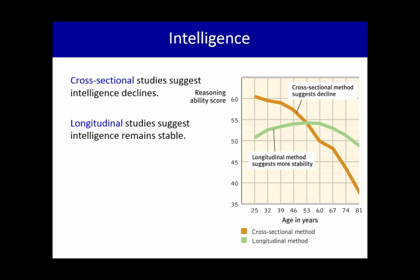I'd like to point out that with the cross-sectional method when you're looking at the 67, 74, 81 year olds you're still, same thing, looking at the healthiest members of society because they've made it to those older ages. So that doesn't really fully explain why it declines so sharply in cross-sectional versus longitudinal.